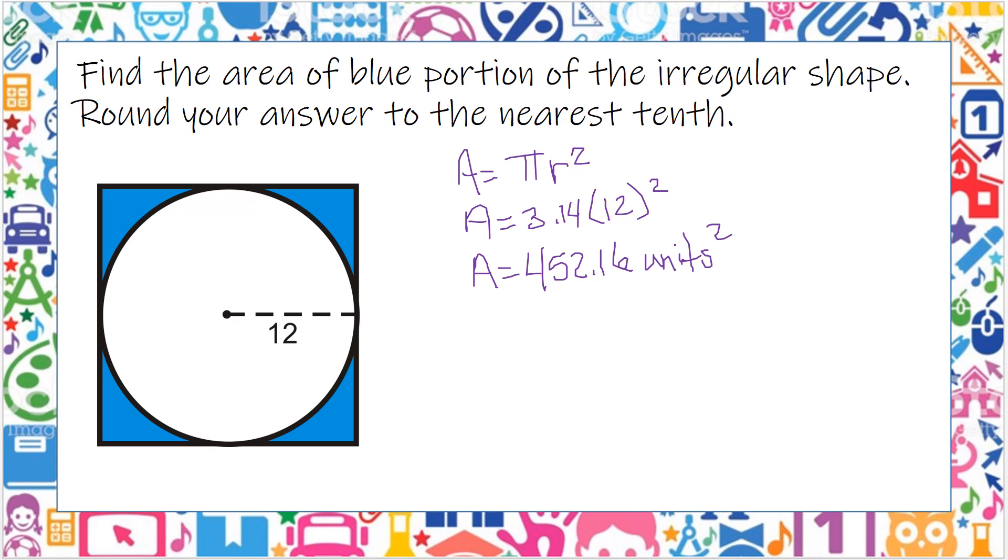Now, we need to find the area of the entire square. Well, if I know that half of it is 12, the other half is 12. This is a square, so the area is the side length squared.